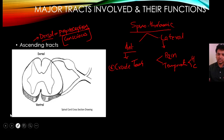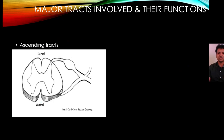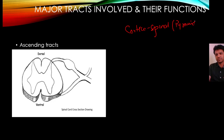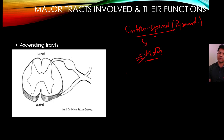The descending tract involved in hemisection of the spinal cord is the corticospinal tract, also called the pyramidal tract. It provides motor supply to muscles.